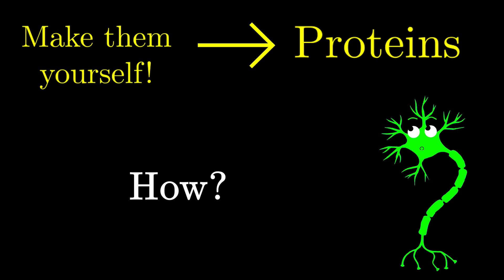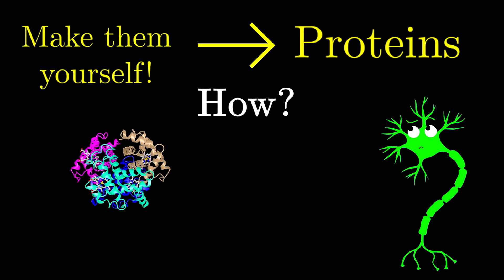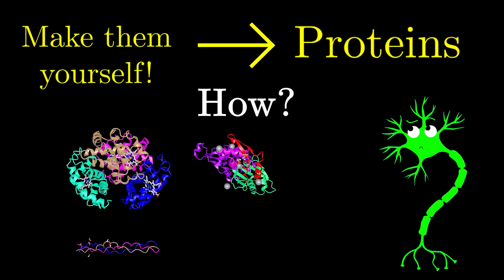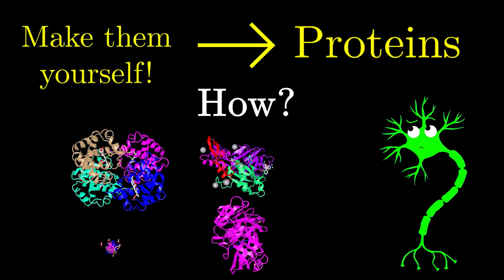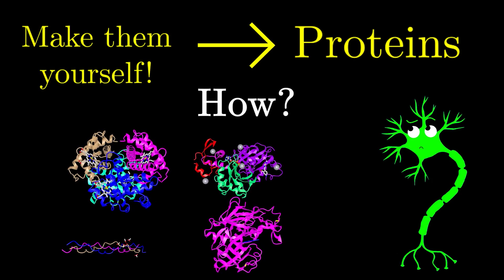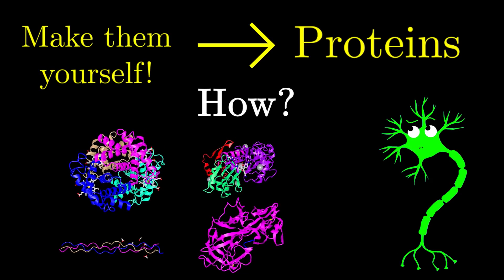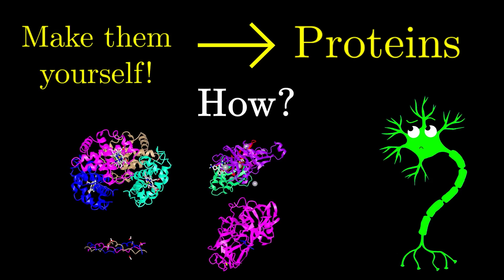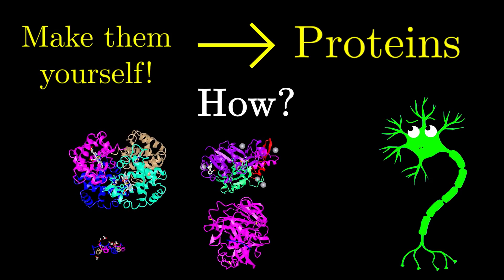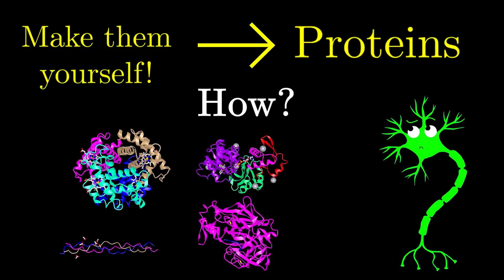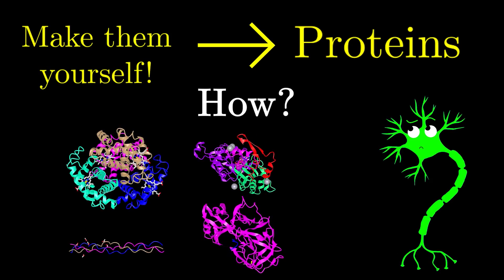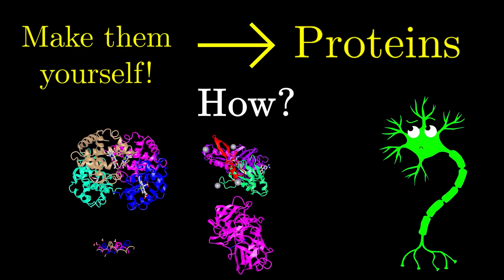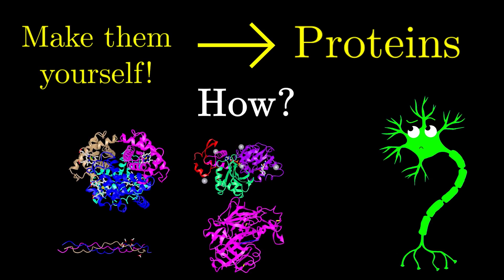And before we can even get to that question, there's the other question of how our body makes all these different types of proteins. How does our body know how to make hemoglobin protein, or keratin protein, or pepsin protein? There's so much diversity of proteins, and our body somehow needs to be able to make all of these. Now just take a second and think about it. How can our body possibly know how to make all of these different types of proteins? It's a difficult challenge.